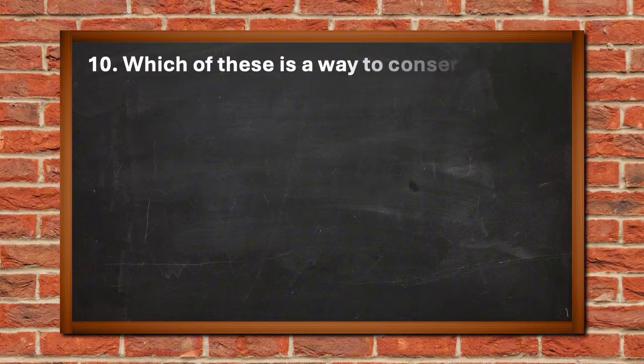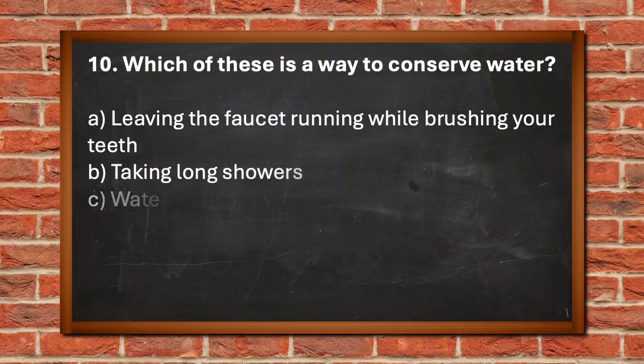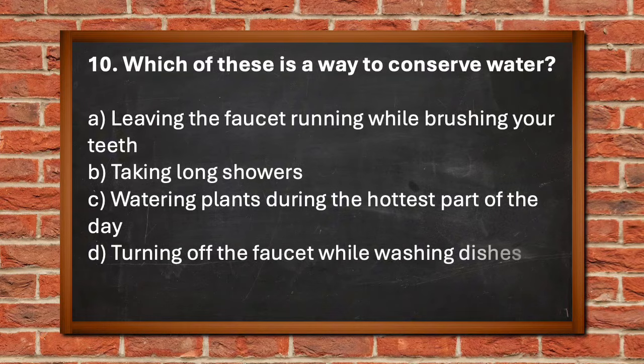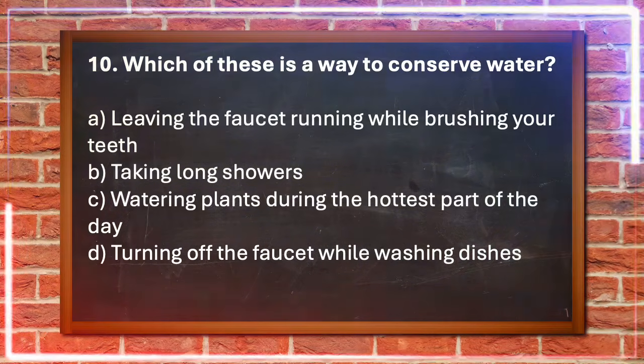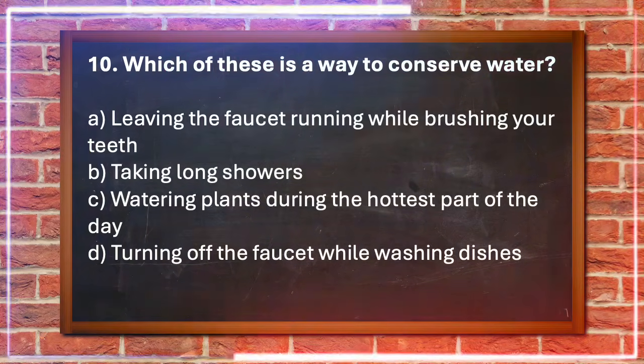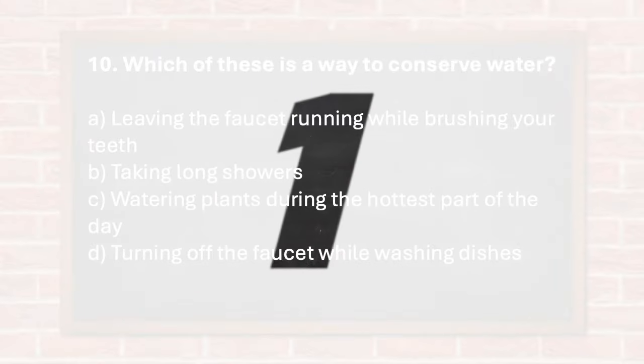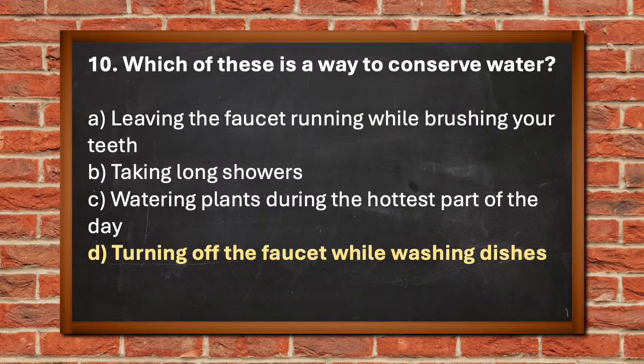Number 10. Which of these is a way to conserve water? A. Leaving the faucet running while brushing your teeth, B. Taking long showers, C. Watering plants during the hottest part of the day, D. Turning off the faucet while washing dishes. The answer is D. Turning off the faucet while washing dishes.